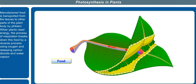Manufactured food is transported from the leaves to other parts of the plant body by phloem. When plants need energy, the process of respiration breaks down this food by a reverse process using oxygen and releasing carbon dioxide and water vapor.